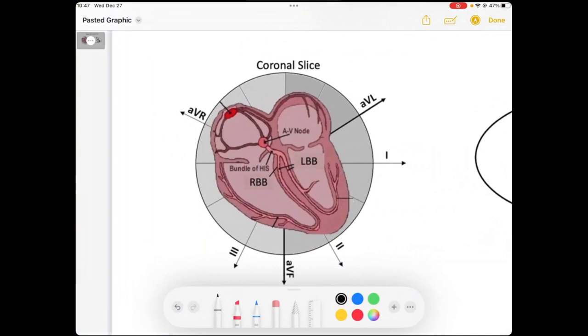Briefly, I'm going to take a look at the heart in this coronal slice and talk through the normal depolarization of the heart. We know that up here is our SA node, and our SA node fires off at 60 to 80 beats per minute, typically, and it's typically pretty regular. And when it fires, it causes the atria to depolarize in this wave of depolarization. And that wave of depolarization creates our P wave, which looks something like this.